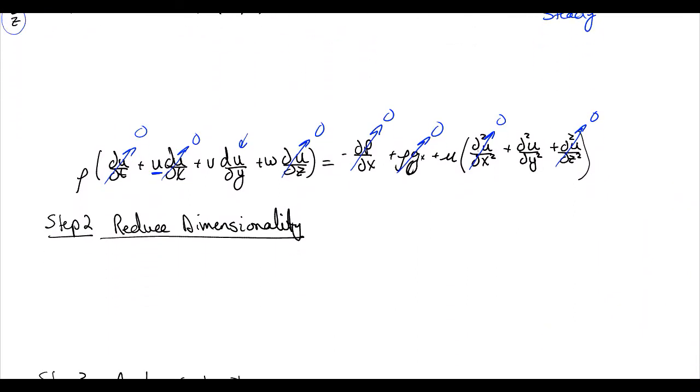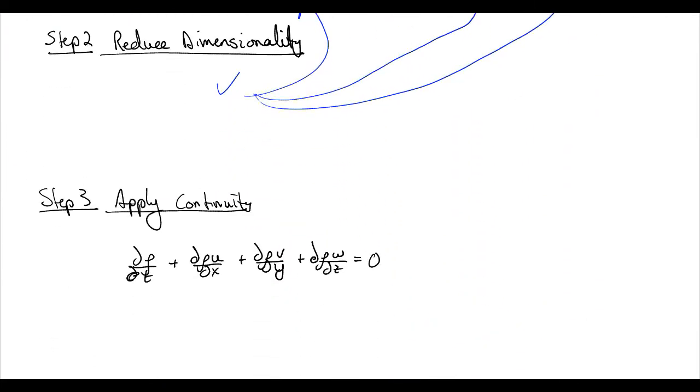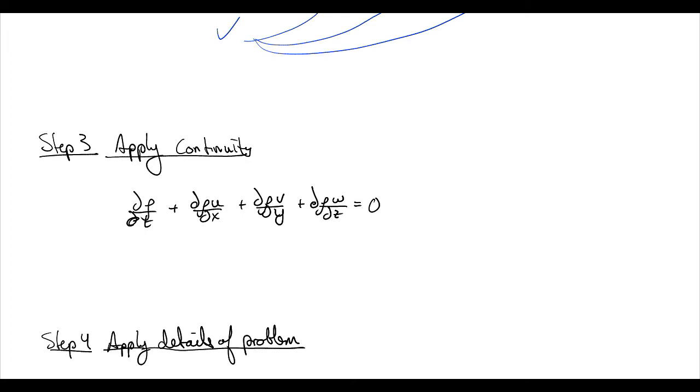So we've reduced our dimensionality check by canceling out all of the things that don't change because of how we've simplified our problem. Infinite flat plates, basically. And now we're going to apply continuity. Remember continuity?